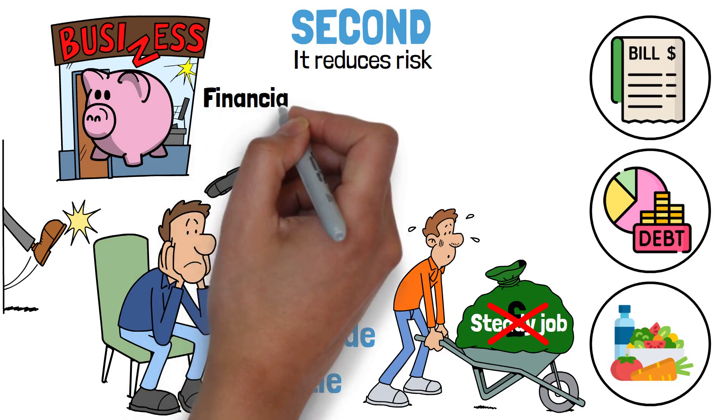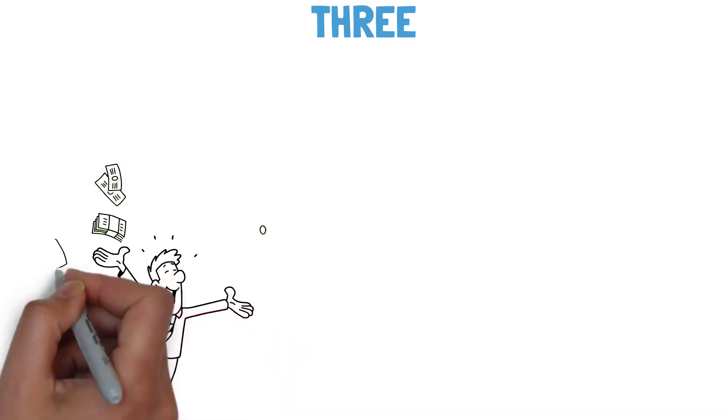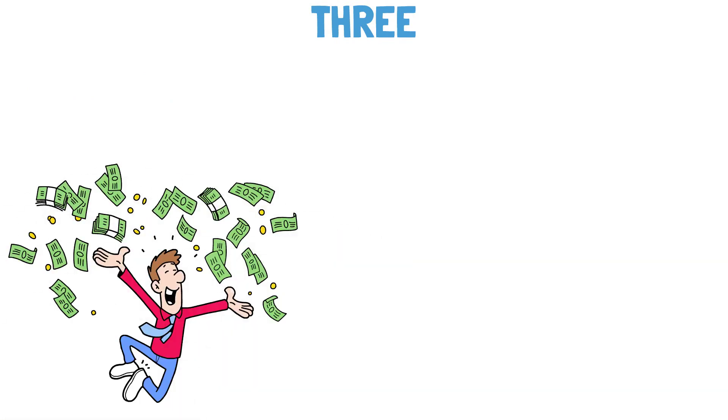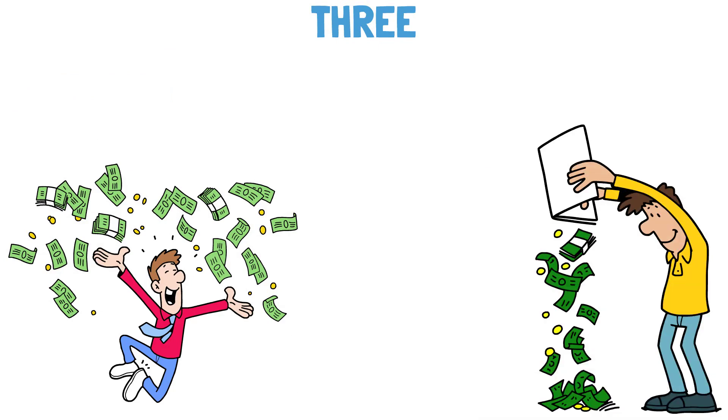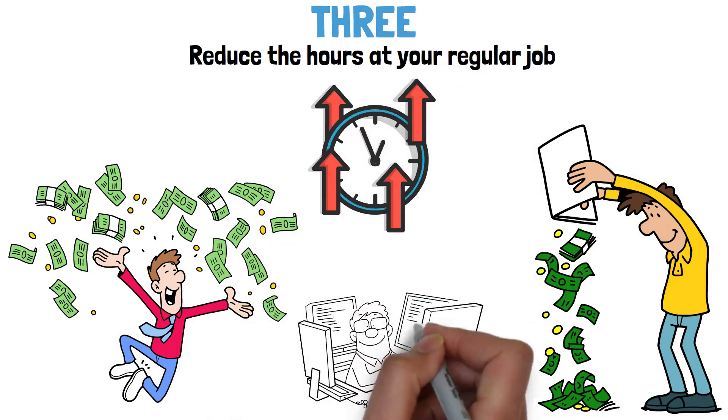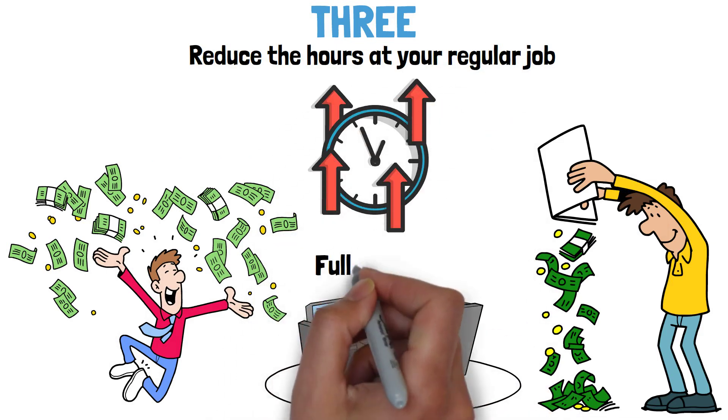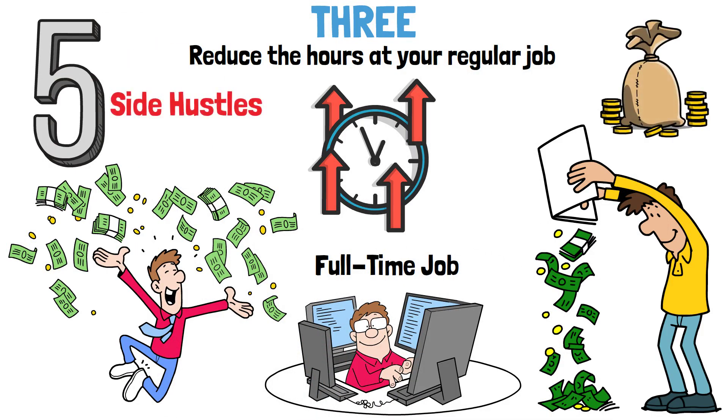That's why one of the smartest financial decisions is to build a side hustle and create other sources of income. This is also the reason why financially successful people usually have five to seven income sources. Three, it gives you more freedom and the potential to make more out of it. A side hustle can give you extreme freedom if you earn enough from it to, for example, reduce the hours at your regular job, and then manage your own time. There is also the possibility that your side hustle can become your full-time job. But now let's take a closer look at the five best-paid side hustles.